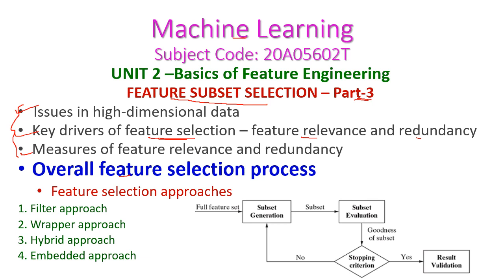There are 4 steps in the feature selection process: subset generation, subset evaluation, stopping criterion, and result validation. After that, the another topic is feature selection approaches, and here again there are 4 approaches: filter approach, wrapper approach, hybrid approach, and embedded approach. We will see all those things in today's class.